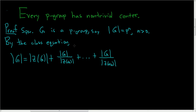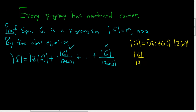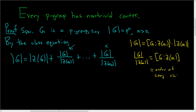Let's pause and talk about what these terms are. Recall that we can write the order of G as the index of the centralizer of a_i in G, times the order of the centralizer of a_i. So dividing both sides by the order of the centralizer, the order of G divided by the order of the centralizer equals the index of the centralizer of a_i in G. And this is the order of the conjugacy class of a_i, which has order greater than 1 by the class equation.